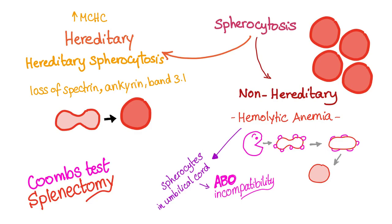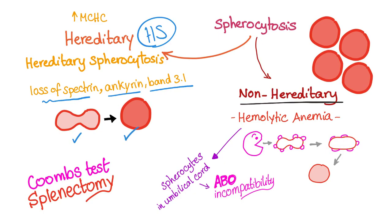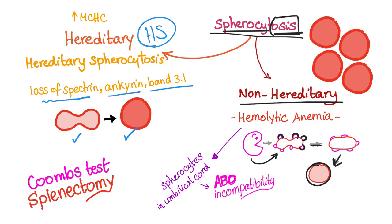In hereditary spherocytosis, there is a loss of spectrin, ankyrin, and band 3.1 proteins, so the red blood cell cannot maintain its shape and becomes a sphere. In non-hereditary cases such as hemolytic anemia, macrophages attack the red blood cell, forming blebs on the surface until it becomes a spherocyte. Spherocytosis simply means a condition or state of having spherocytes in the blood.